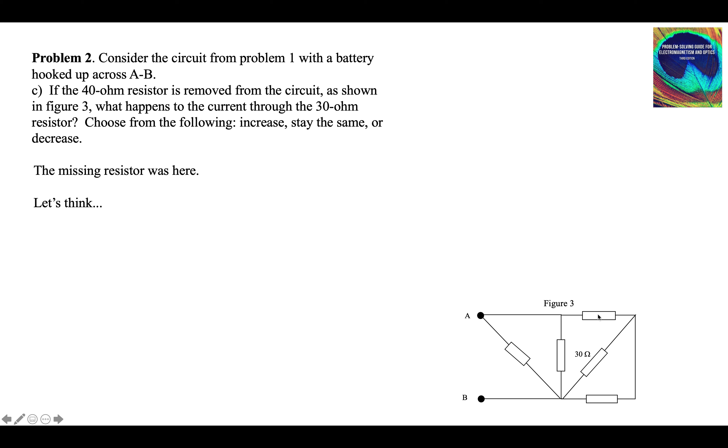So the current through the 100 is going to go up because the resistance of the branch went down. But most of it's going to go through the 20. I think we might have to calculate it. It's not obvious.